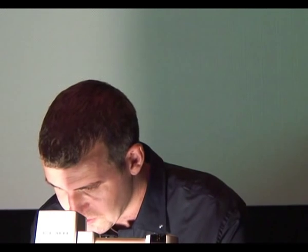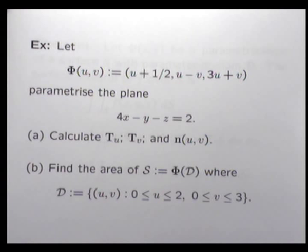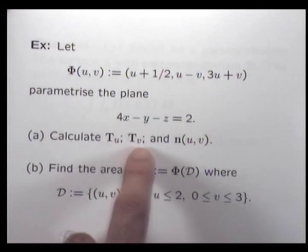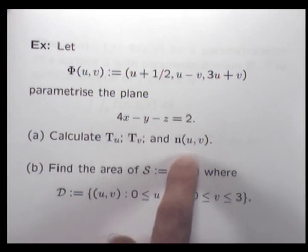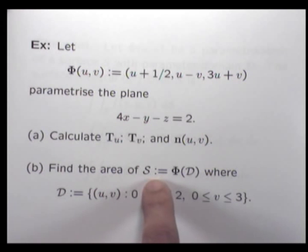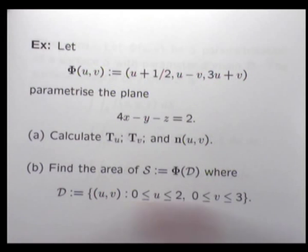Let's do an exercise and see how it all works. We're given a parametrization and asked to calculate the tangent vectors and the vector N, and find the area of this surface S, where the parameter domain is this rectangle. It's a pretty straightforward question — nothing too tricky about it.